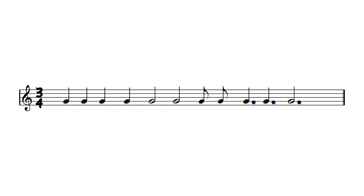For this next challenge we're going to change the time signature from 4, 4 to 3, 4. Let's see where we have to place the bar lines to stick to 3, 4. The bottom number 4 tells us we are working with quarter notes — crotchets. The top number tells us we have 3 crotchets per bar, so every bar must add up to 3 crotchet beats. Working out the note durations: we have 4 crotchets each worth 1 beat, then a minim worth 2 beats, then another minim worth 2 beats, then a quaver worth half a beat, followed by another quaver worth another half a beat.